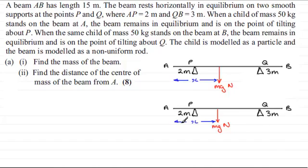What else will we need? Well let's start to talk about this child of mass 50 kilograms then. When the child stands on the beam at A we'll put her weight in. So that'd be 50G acting downwards here, 50G Newtons. We're told that the beam remains in equilibrium but it's on the point of tilting about P.